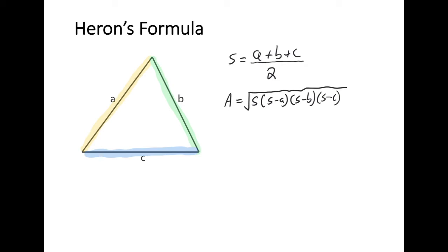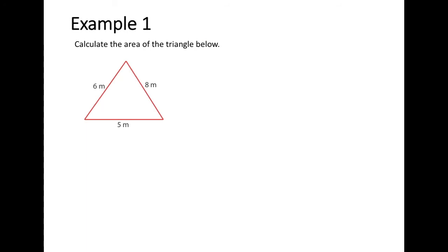Let's have a look at an example where we want to calculate the area of a triangle. We've got three sides of the triangle and no other information. My A value is going to be 5, my B value is going to be 6, and my C value is going to be 8. It doesn't matter what order I label them in, as long as I use each side once to get my A, B, and C values.